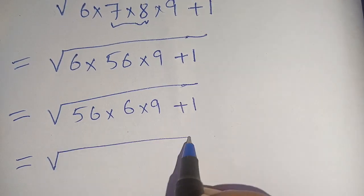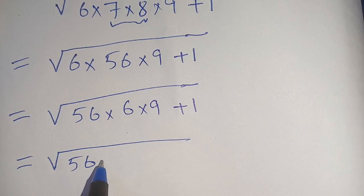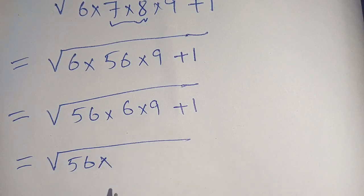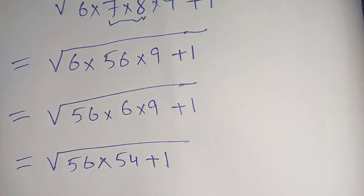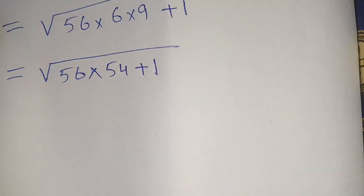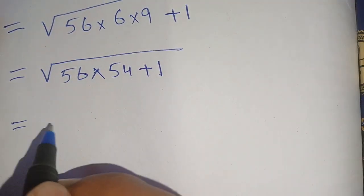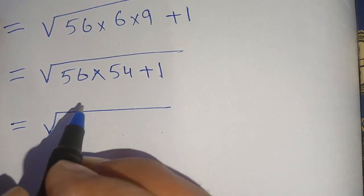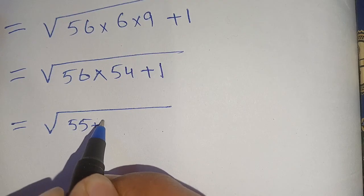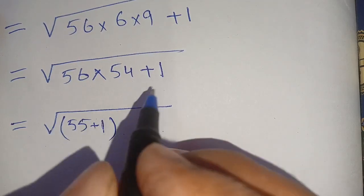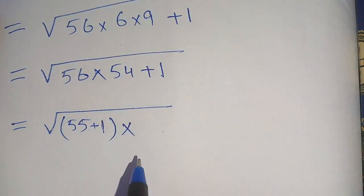Now we can write it as square root of 56, which can be written as 55 plus 1, that becomes 56, times 54, which can be written as 55 minus 1, plus 1 as it is.